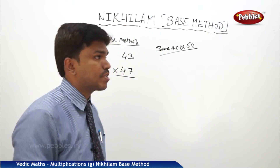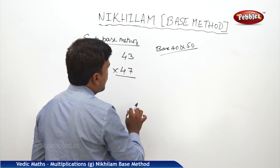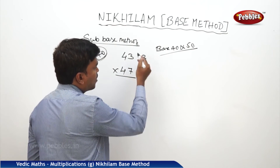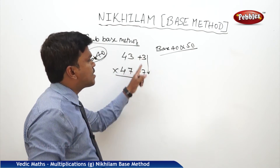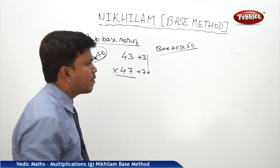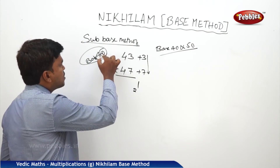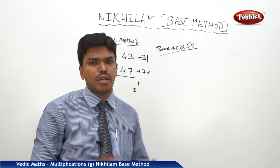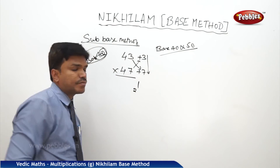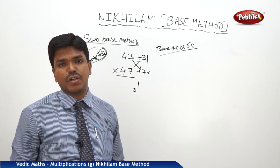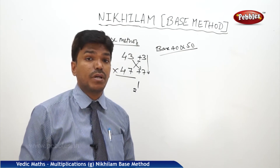Let us try first with base 40. If I take base 40, then 43 is plus 3 more than the base and 47 is plus 7 more. First multiply: 3 times 7 is 21. Since base 40 has only one zero, the right side part should have one digit, so drop 1 and carry 2. Cross addition: 43 plus 7, or 47 plus 3, both give 50.